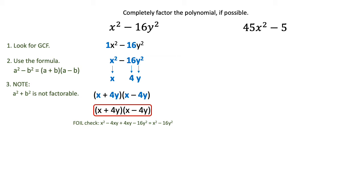In the second example let's look for a GCF first, and with 45 and 5 they both have a 5 in common so we'll be able to take that 5 out. After you divide the 5 out that will leave you with 9x squared minus 1 inside, which you will put inside parentheses.